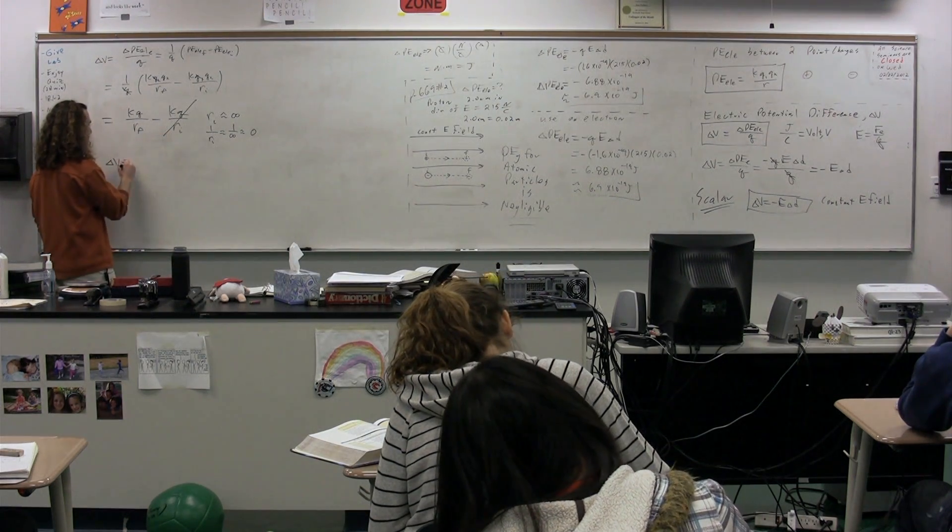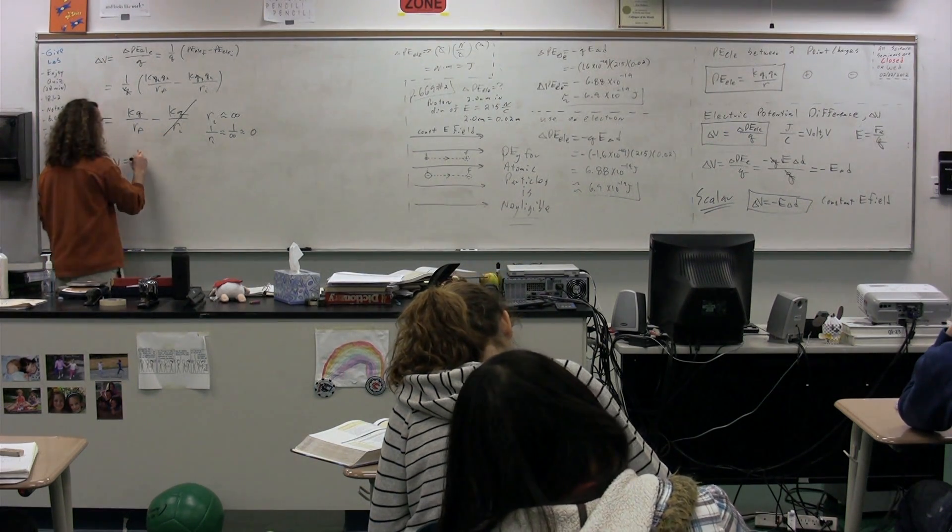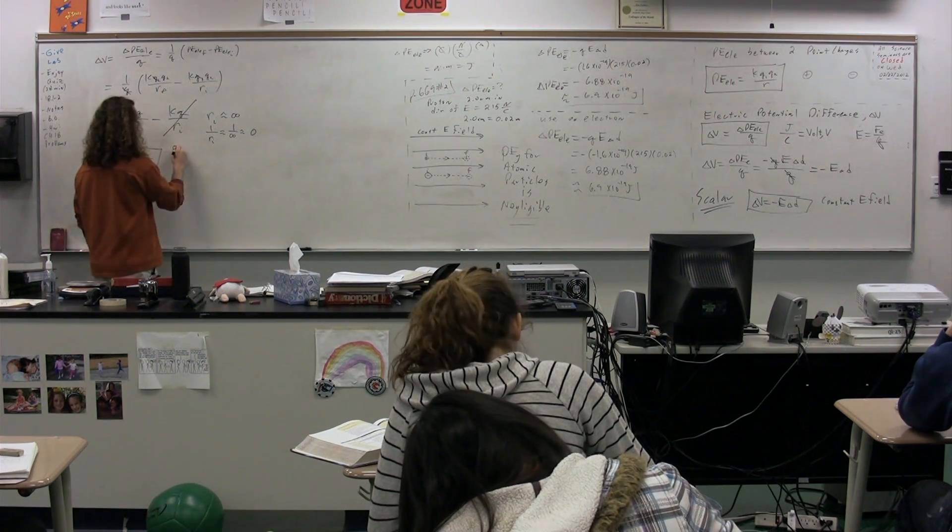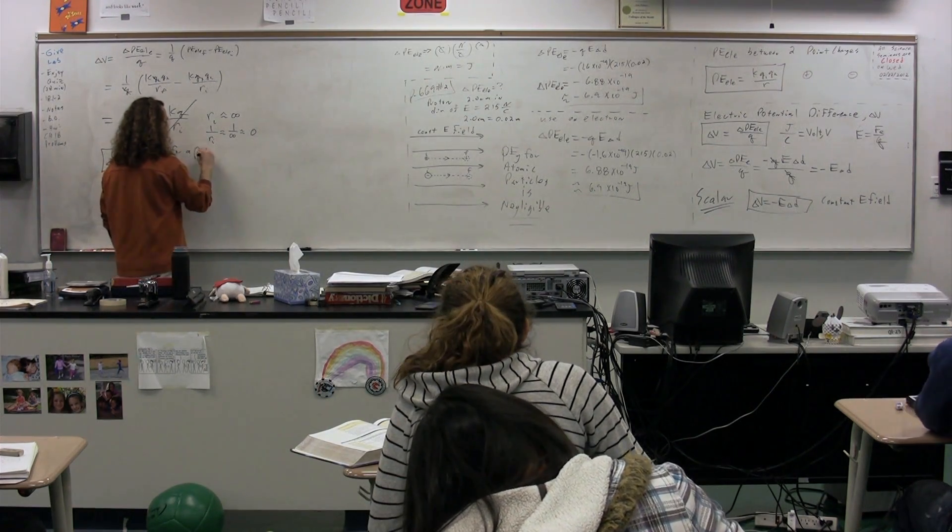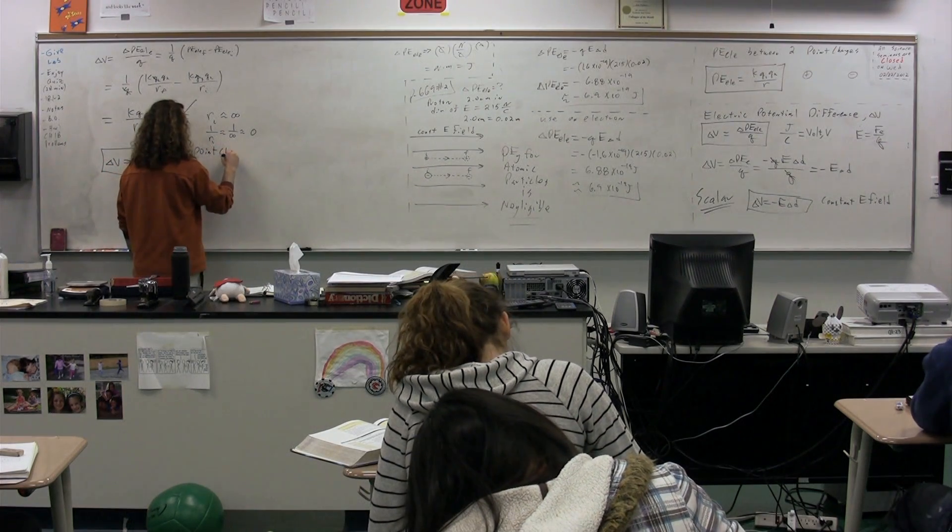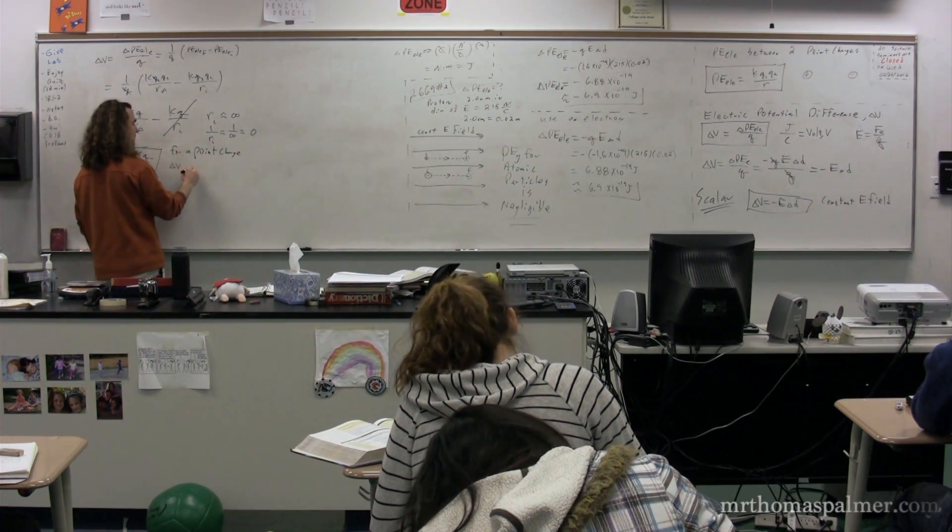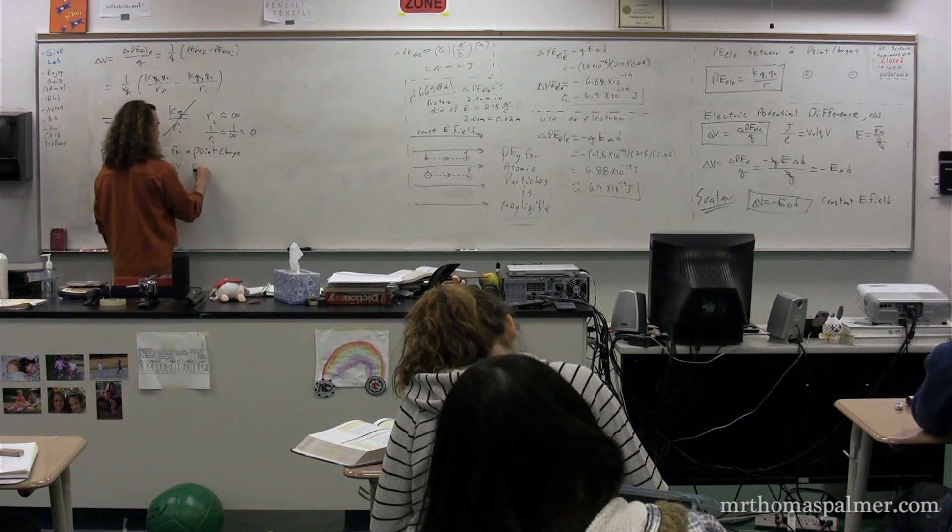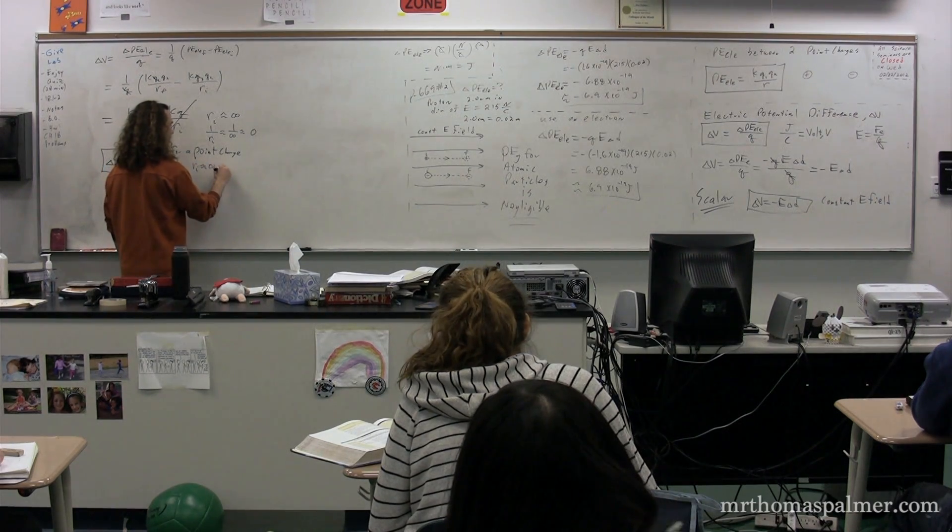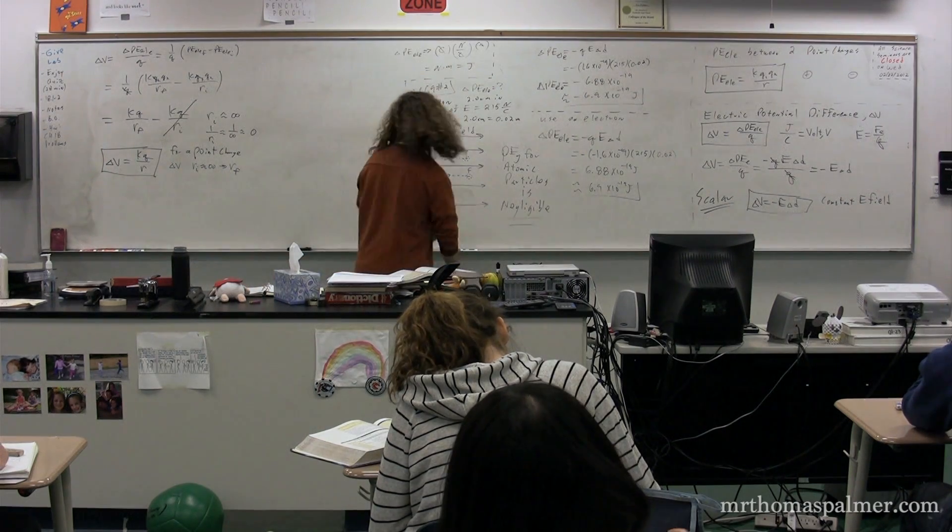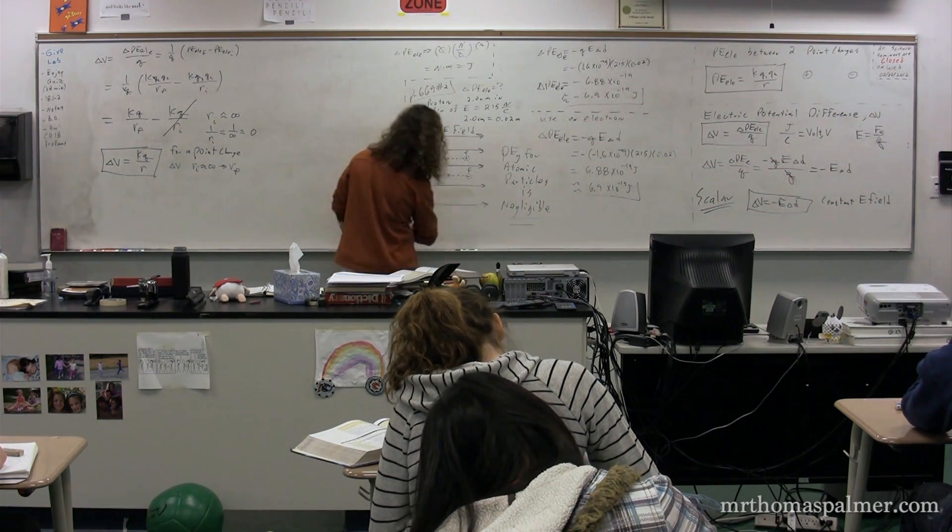And the electric potential difference for a point charge is equal to KQ over R. And this is for a point charge. And by definition, it's the electric potential difference between a point R initial, which is infinitely far away, and wherever that final point is, wherever you're talking to relative to that charge.